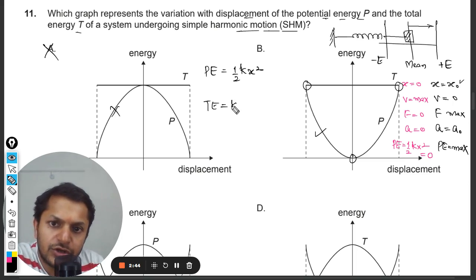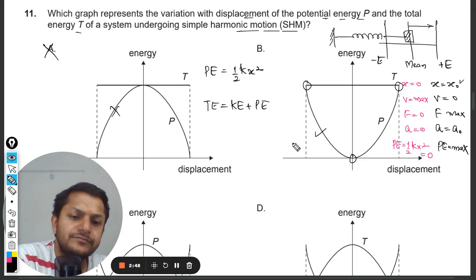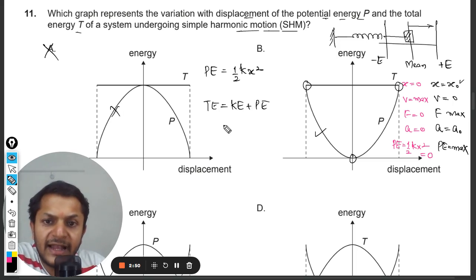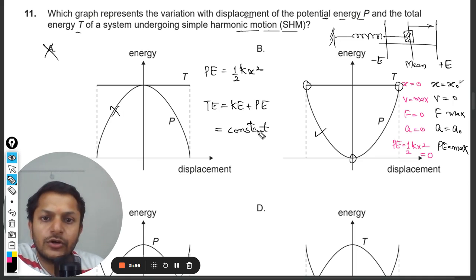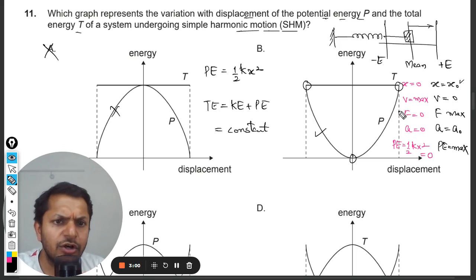So the total energy is the sum total of the kinetic and the potential, and it is always constant in the system. It does not vary. So you can see that this is kinetic plus potential. So at the extreme position, only and only potential energy is there and the kinetic energy is zero at this point.